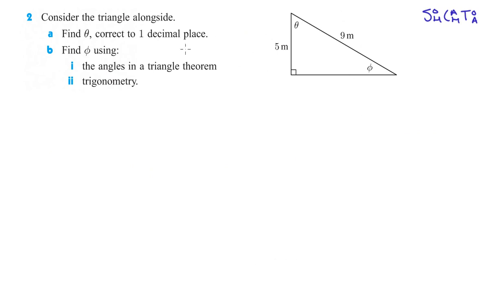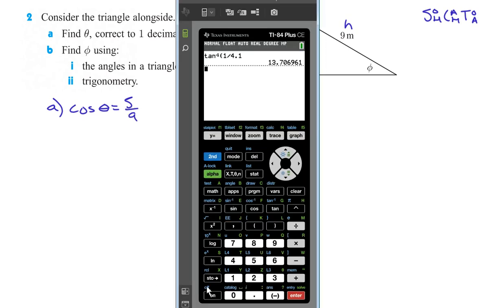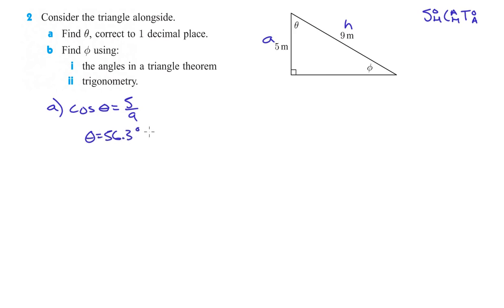Consider the triangle alongside. Find theta correct to one decimal place. So here's theta. From this angle, this is hypotenuse no matter what, and from this angle this is the adjacent. Hypotenuse and adjacent is cosine. So cosine theta equals adjacent, which is 5, over hypotenuse, which is 9. Second cosine of 5 divided by 9 gives us 56.25, or 56.3 degrees.